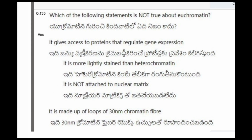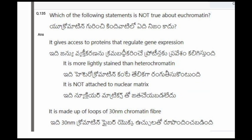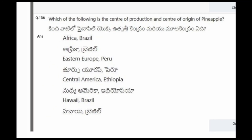Next question: Which of the following statements is not true about euchromatin? The options are: it gives access to proteins that regulate gene expression; it is more highly stained than heterochromatin; it is not attached to nuclear matrix; it is made up of loops of 30 nanometer chromatin fiber. The correct option is the third one, that is it is not attached to nuclear matrix.